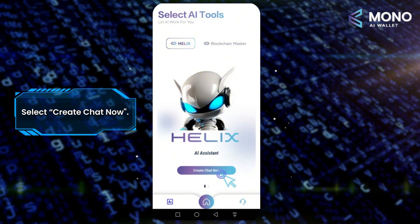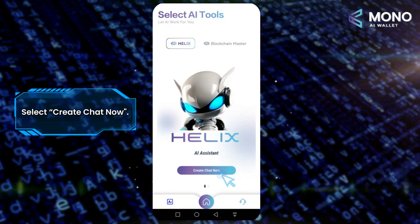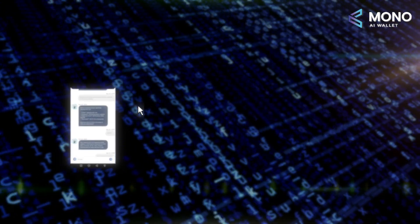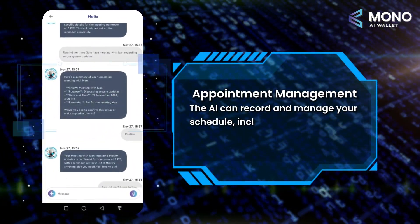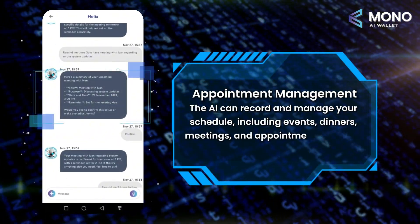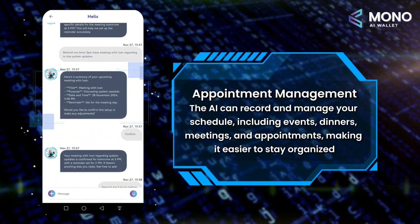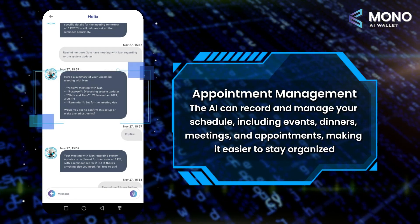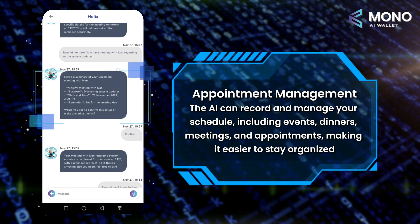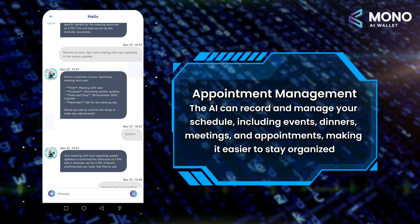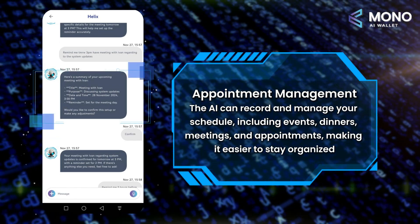AI Assistant Helix has many functions, such as appointment management. The AI can record and manage your schedule, including events, dinners, meetings, and appointments, making it easier to stay organized.